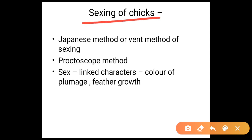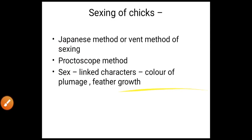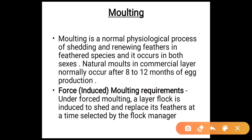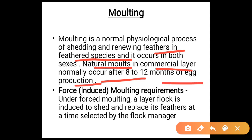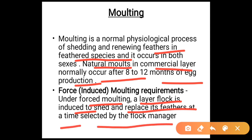Sexing of chicks: the Japanese method or vent method may be used for sexing of chicks, as well as the proctoscope method. Sex-linked characters such as color of plumage and feather growth can also be used. Molting is a normal physiological process of shedding and renewing feathers in feathered species; it occurs in both sexes. Natural molt in a commercial layer normally occurs after 8–12 months of age.